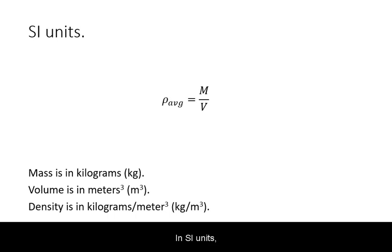In SI units, mass is measured in kilograms, volume is measured in cubic meters, and hence density will have the units of kilograms per cubic meter.